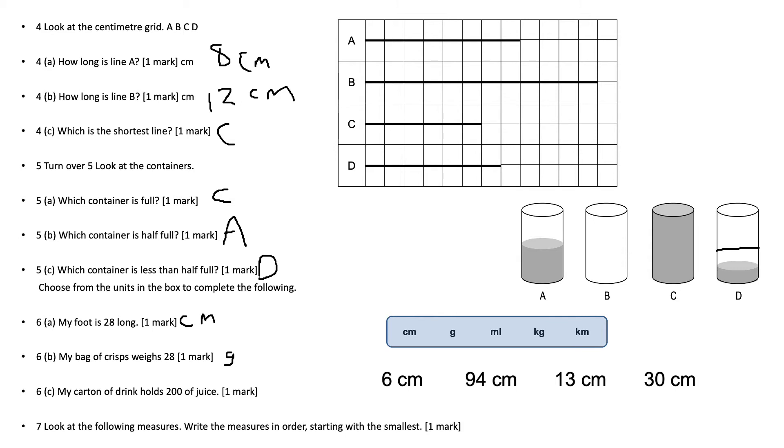Question number seven, look at these measures: 6 centimeters, 94 centimeters, 13 centimeters and 30 centimeters. Write the measures in order starting with the smallest. The smallest is 6 centimeters, then it's 13 centimeters, then it's 30 centimeters, and then it's 94 centimeters.